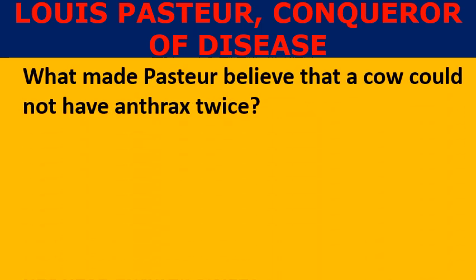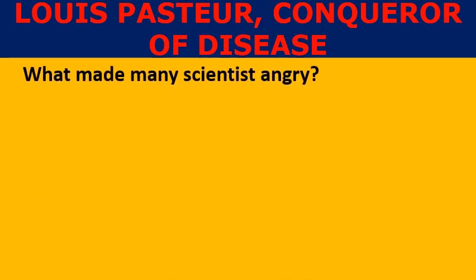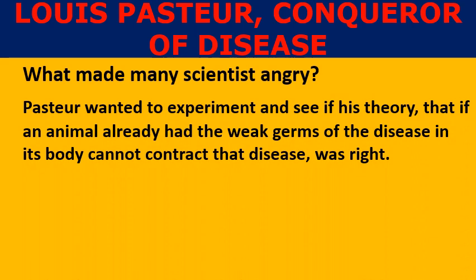What made Pasteur believe that a cow could not have anthrax twice? If it had weak germs of this disease in its body, it could not be attacked by the disease again. Pasteur wanted to experiment to see if his theory — that an animal already having weak germs of a disease cannot contract that disease — was right.